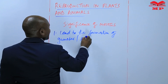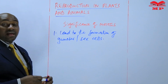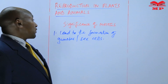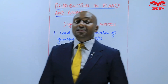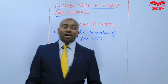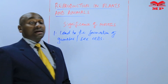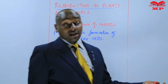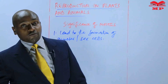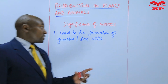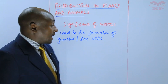Gametes are sex cells — the cells that determine the sex of an organism. In animals, we have the sperm cells and we have the ova; all those are formed during meiosis. In plants, we also have the male gamete nucleus and we have the ovum, which are the egg cells, and they are also formed during meiosis.